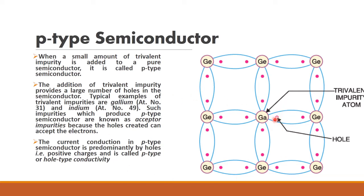A hole means there is a vacant position, so it will accept an electron. Therefore, this type of impurity is called acceptor impurity. For P-type semiconductor, we add acceptor impurities, and for N-type semiconductor, we add donor impurities.